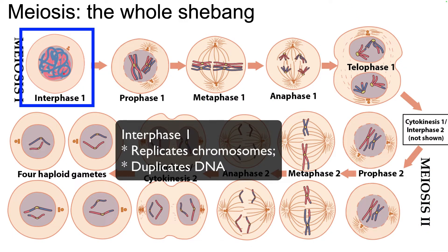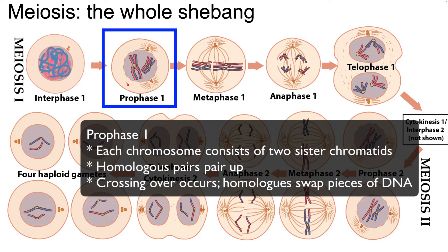We begin with interphase, and the thing to remember about interphase of meiosis is that it does exactly what interphase of mitosis does — it replicates the chromosomes and duplicates the DNA. That's why when we get to prophase one, each chromosome consists of two sister chromatids.